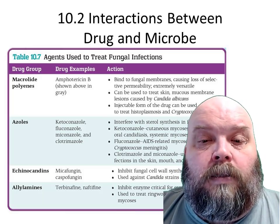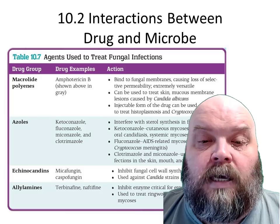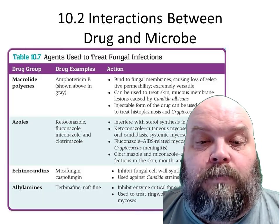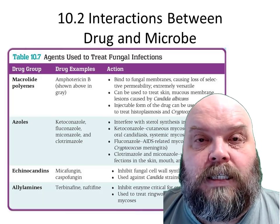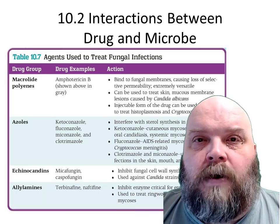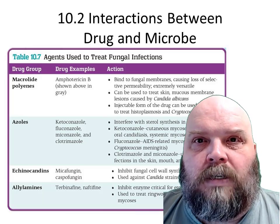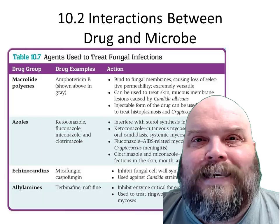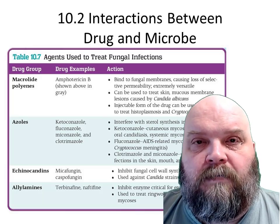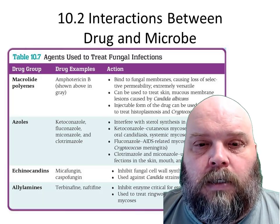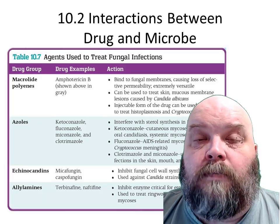Fluconazole is used, as shown in the table, for aspergillosis and cryptococcal meningitis. These are fungal infections that are no longer topical — these are deep tissue fungal infections. Lungs, and cryptococcus can get into the brain.